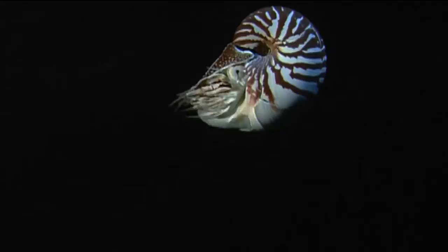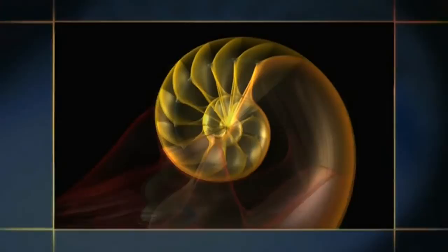In order to stay buoyant as it grows, the Nautilus must remove this seawater from its shell. To do so, it uses a tube called the syphuncle, which spirals through every chamber.